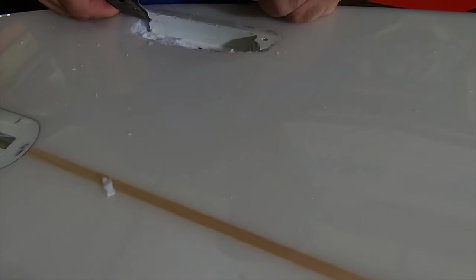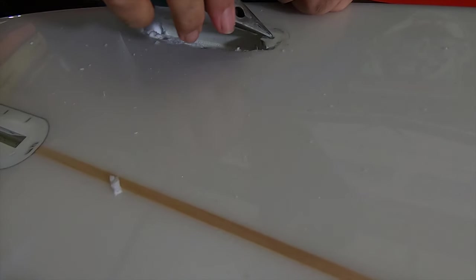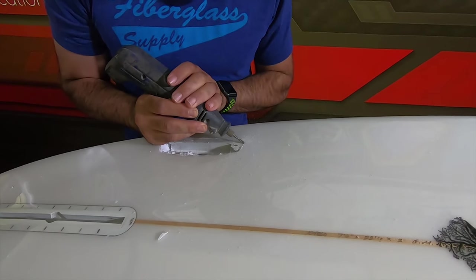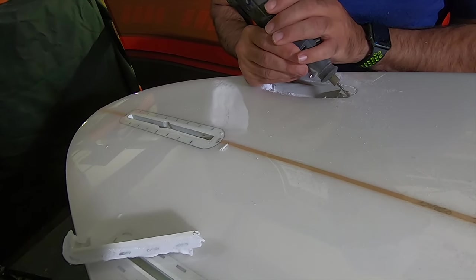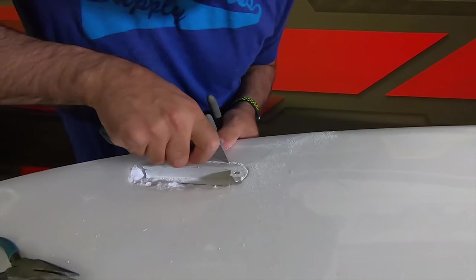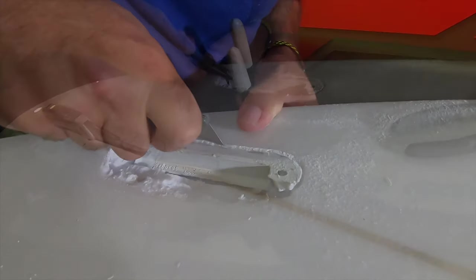The other side of the box here is still pretty well attached to the board, so we're going to use a dremel and route around that a little bit to get through that layer of glass on top so we can break the rest of that box out without damaging the board further.